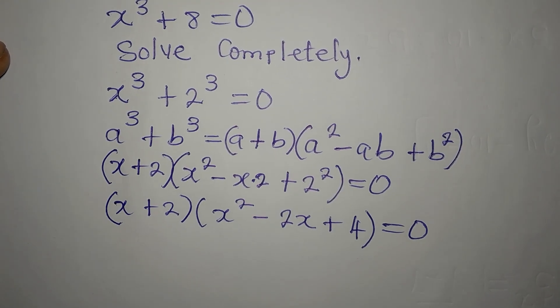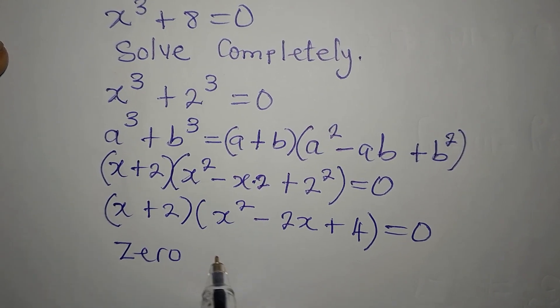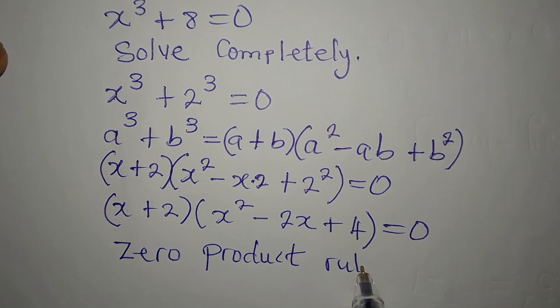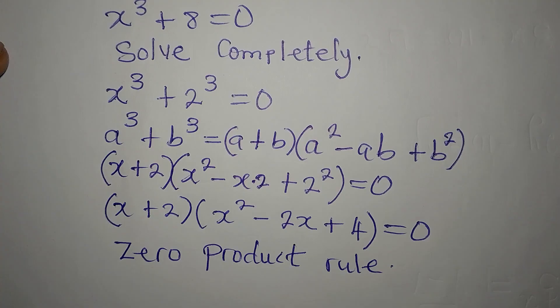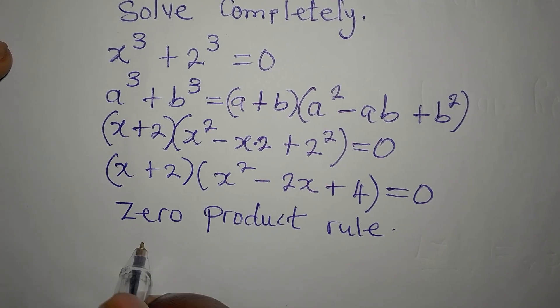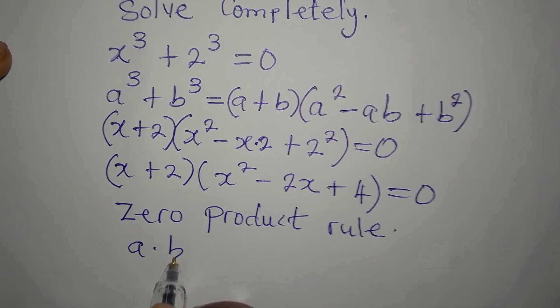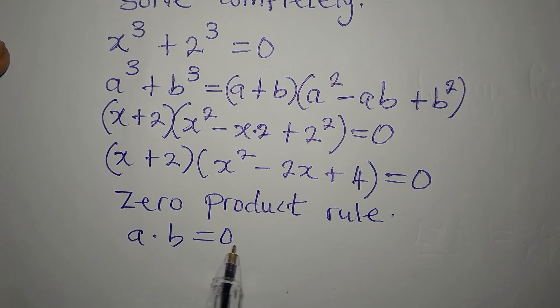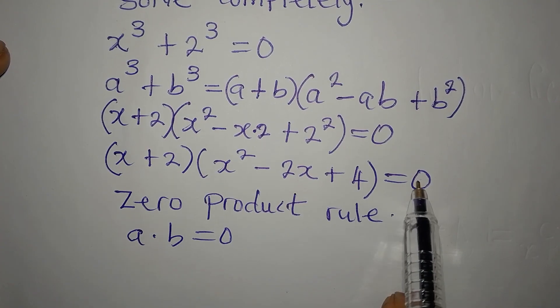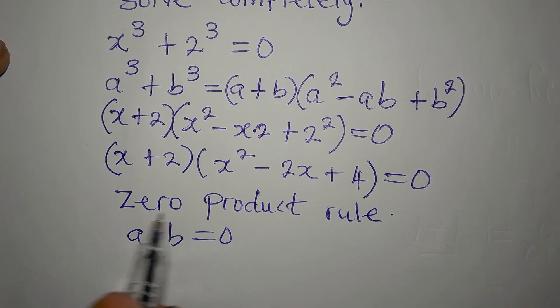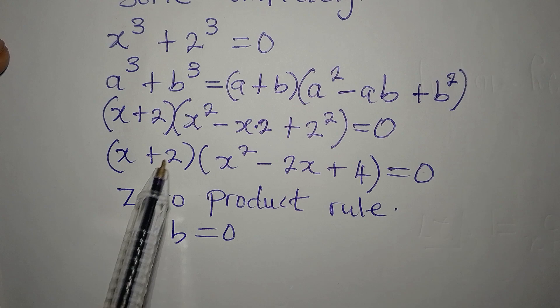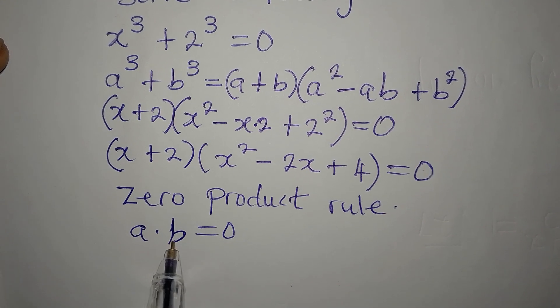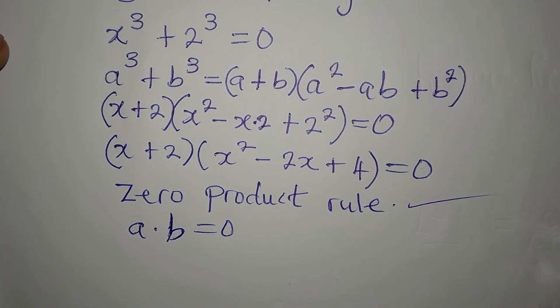Now we have zero product rule. And you should know when to apply this. You apply it when you have a times b to be 0. So it is either a is 0 or b is equal to 0. And that is the same thing here. If you relate this to this, your a now is x plus 2, while this one is b. So it's when you multiply two things to get 0, that you apply this rule.